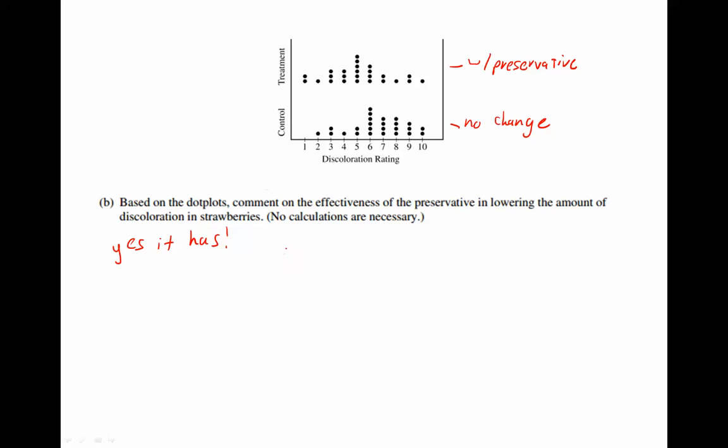Now, to make a complete answer, we need to make sure that we're stating it in context. And we need to make sure that we are linking our thinking explicitly with what we see on the dot plot. So something like this would be able to get full credit. Yes, it has. It is clear based on the dot plots that the top treatment, that the treatment has lowered the mean, I should say the overall mean, on discoloration.